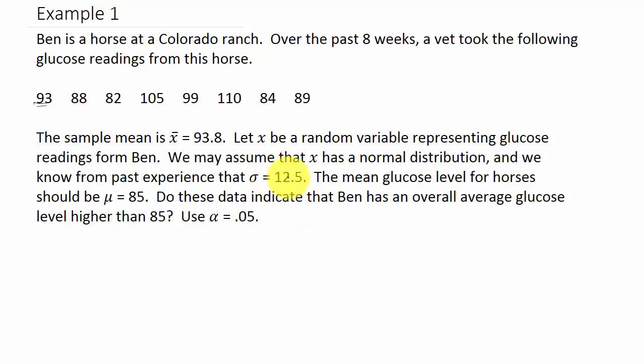The mean glucose level for horses should be mu equals 85. That's an average based on all the horses of that breed. Do these data indicate that Ben has an overall average glucose level higher than 85? Use alpha equals 0.05.